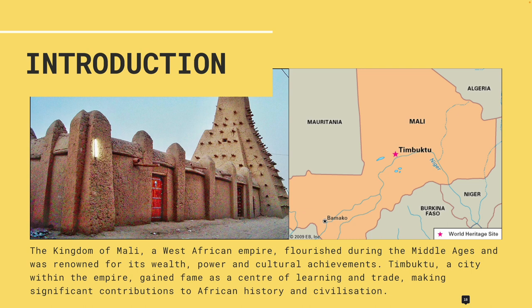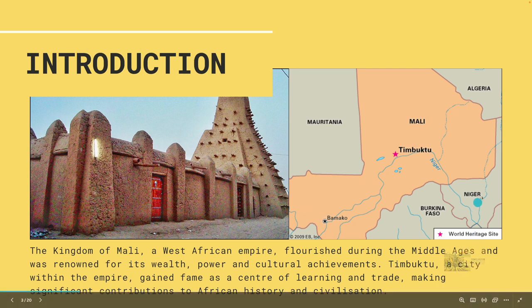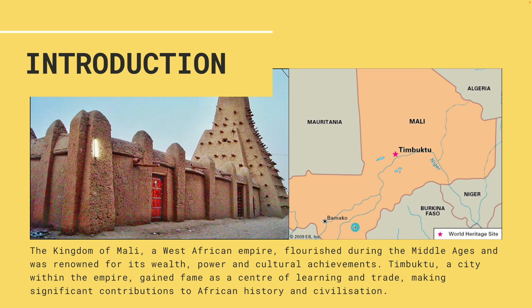Looking at the map, you can see how extensive the Kingdom of Mali was — it had parts of Niger, Burkina Faso, Mauritania, and even touched Algeria. On the left-hand side we can see a beautiful architectural structure that was part of the Mali Empire — look at the details on those doors and the curvature of those walls.